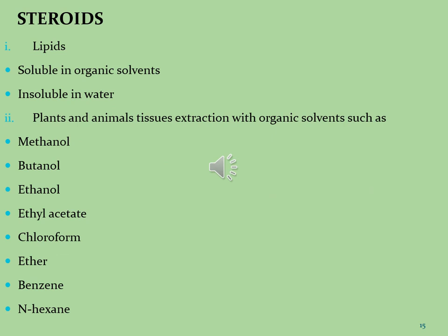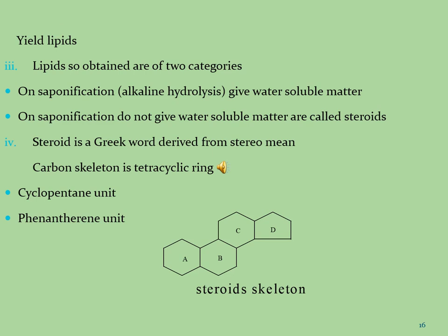Let's see what steroids are. Steroids are also a secondary metabolite, generally known as lipids. Steroids are soluble in organic solvents and insoluble in water. Different organic solvents are used for the isolation and extraction of these secondary metabolites: methanol, butanol, ethanol, ethyl acetate, chloroform, ether, benzene, and n-hexane. The lipids obtained are of two categories: one on saponification gives water-soluble matter, and the other on saponification does not. These substances are known as steroids. Steroid is a Greek word derived from 'stereos,' meaning solid.